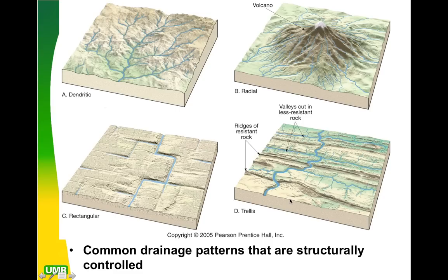And then trellis is going to kind of look like this, where we have our main water flow here, and then we have these valleys that seem to run perpendicular to it. The water is kind of flowing down through those valleys in its own little direction, making other dendritic or trellis-like pathways.